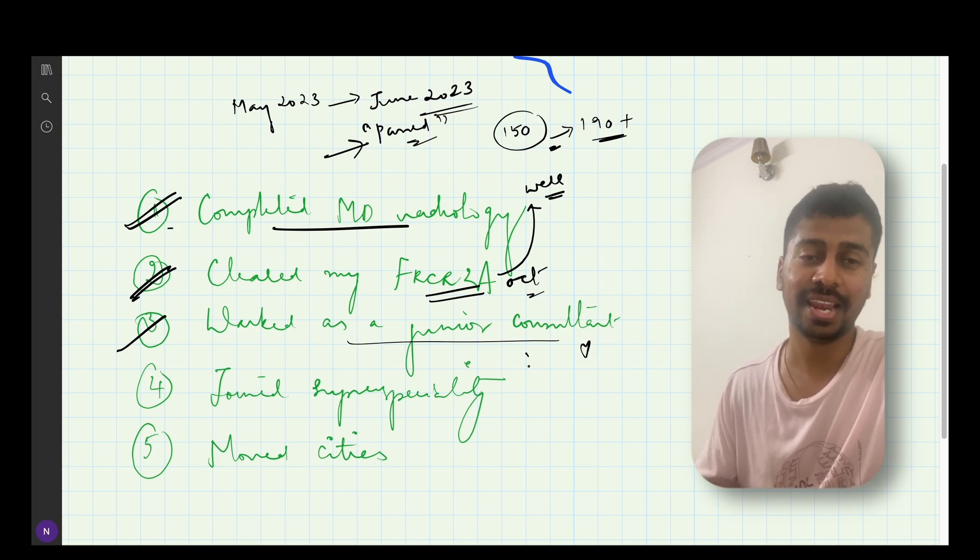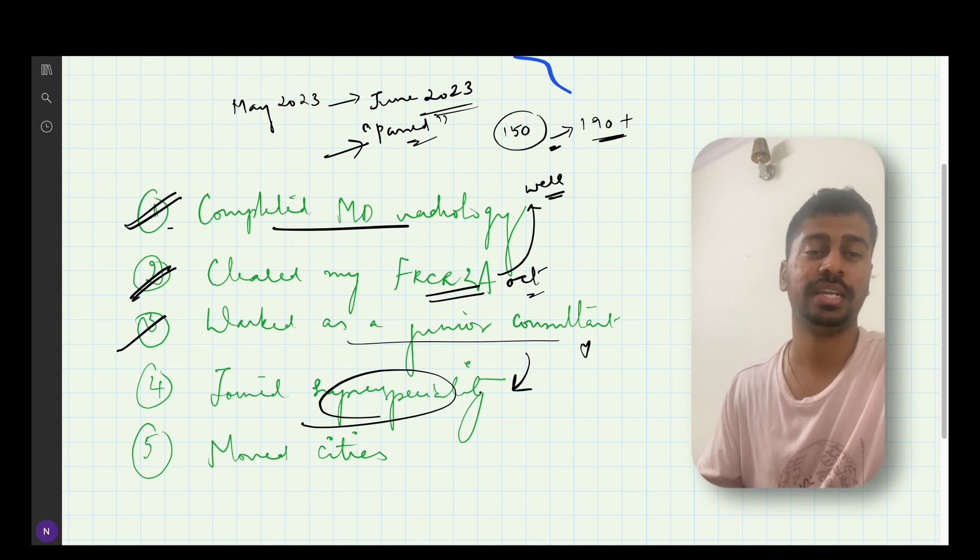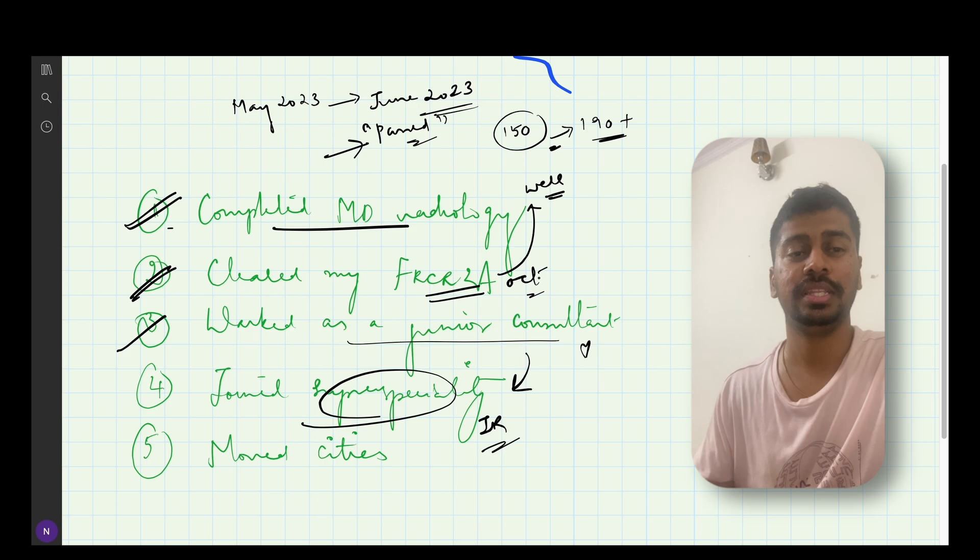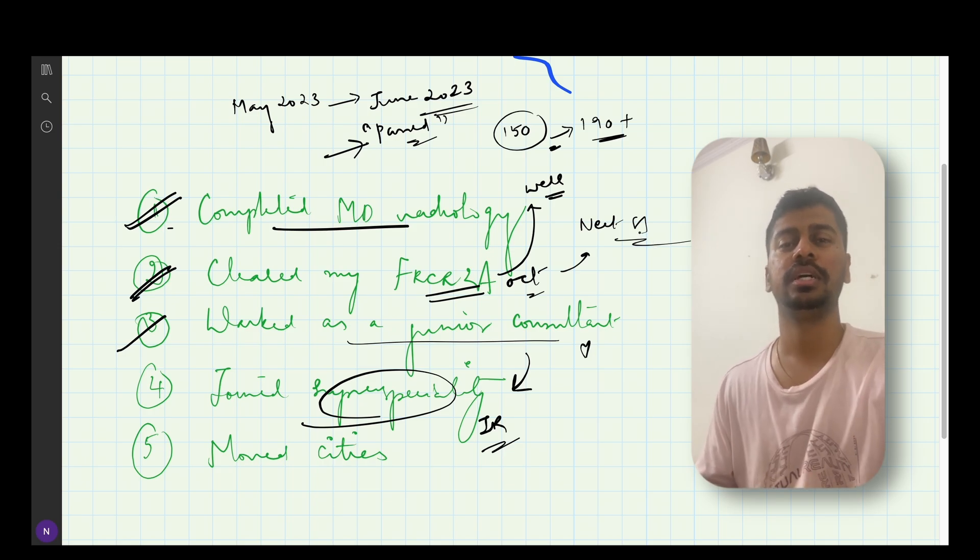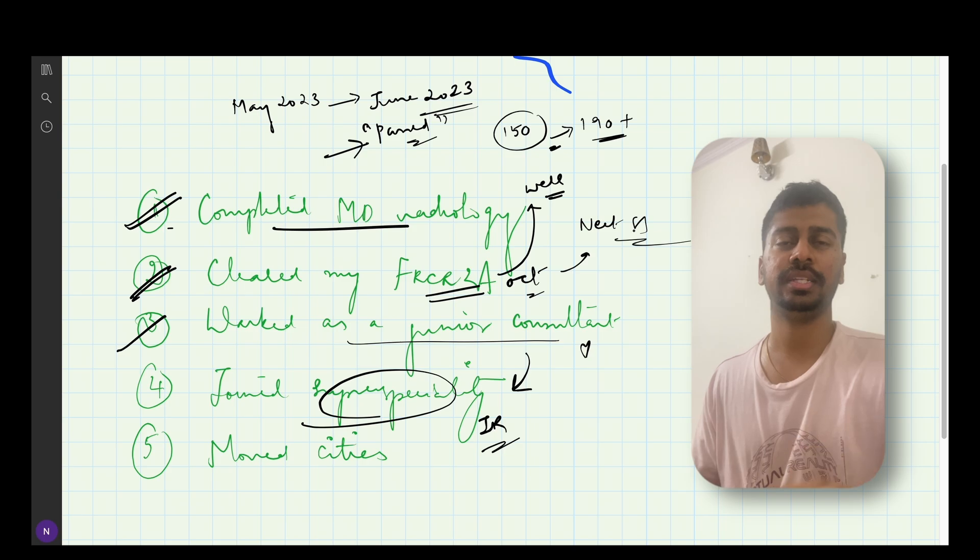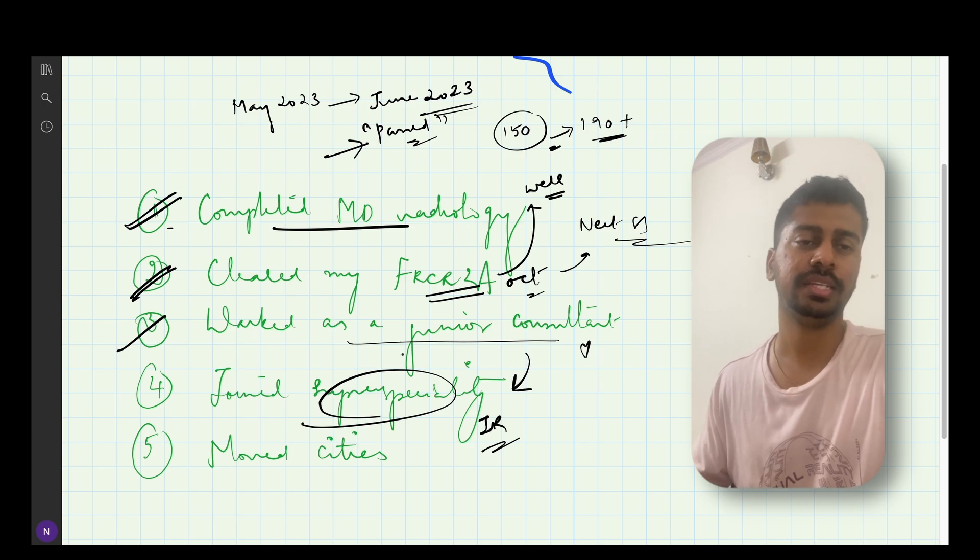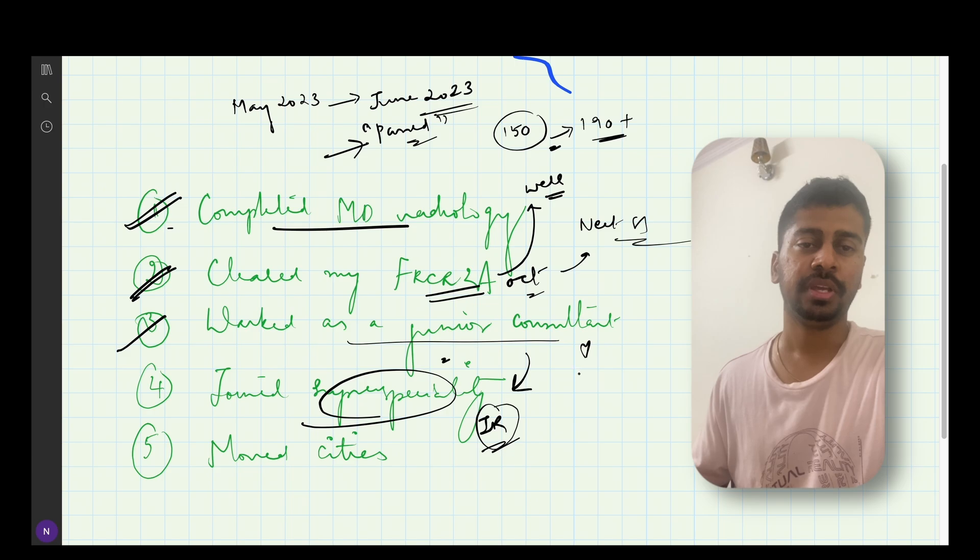Then another biggest change happened in my life - I joined super specialty in intervention radiology. When I was giving my FRCR exam I also gave my NEET SS exam, even though I was not really preparing for NEET SS. I just gave the exam because it was two weeks ahead of my FRCR exam and I just went to the exam with the same knowledge that I had for the FRCR exam. I got a decent rank in this NEET SS super specialty exam and I got an intervention radiology seat.